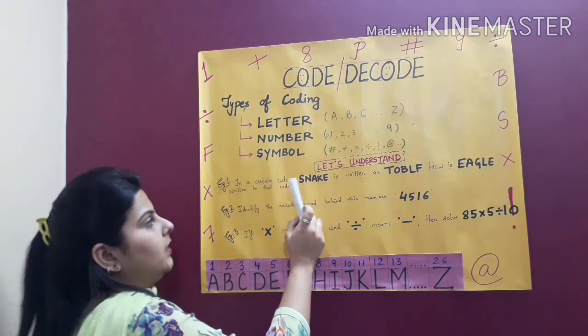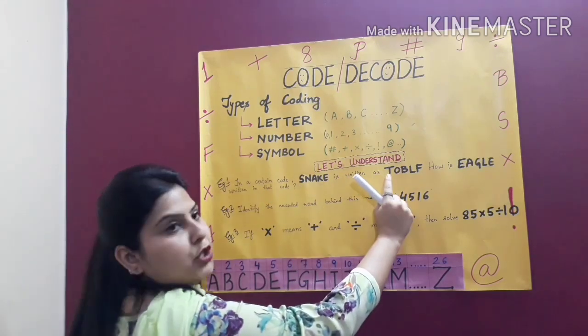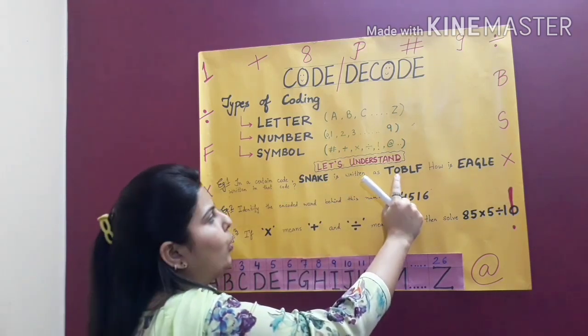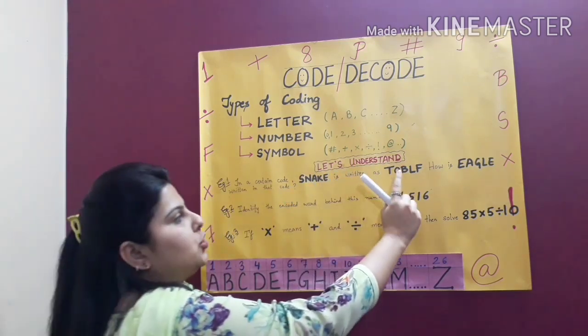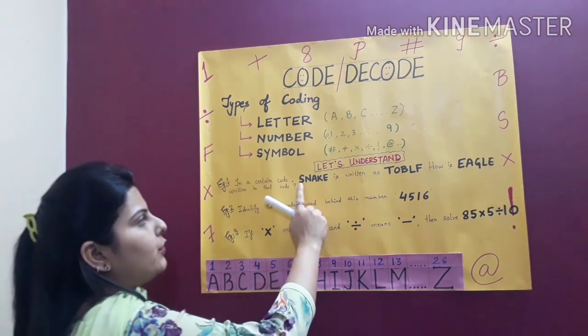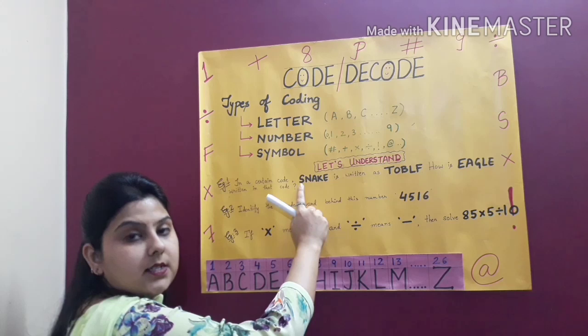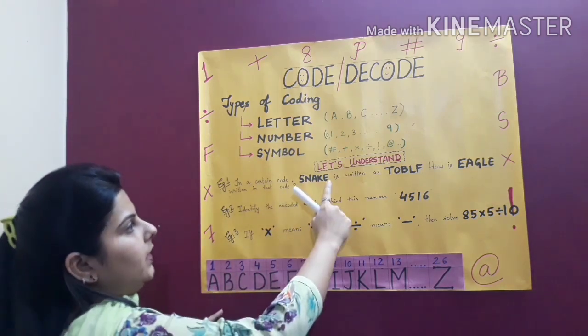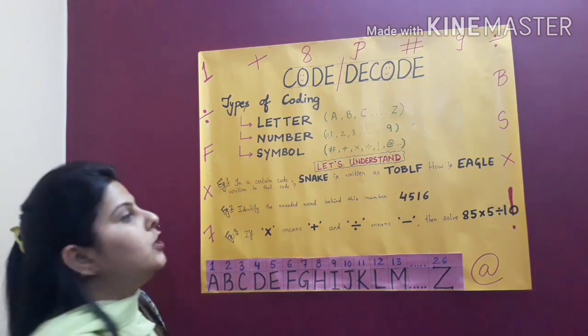So here if I see this S is changed to T. N is changed to O. A is changed to B. If you notice you will see that they are increasing the letters by 1. Like A is becoming B. E is becoming F.